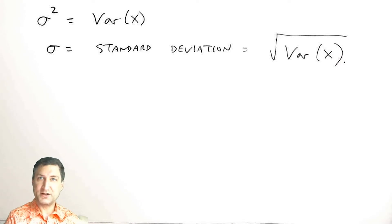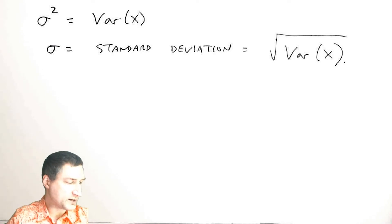The idea is that bigger variances or bigger standard deviations mean that the random variable is spread further apart from its expected value. To make this more concrete, let's just do an example.